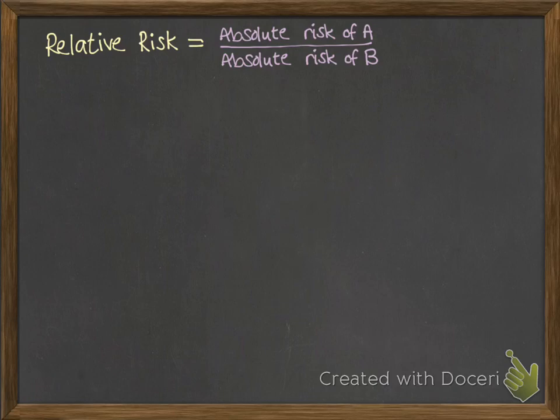To work out relative risk, you do the absolute risk of one divided by the absolute risk of the other. And the one that you put on the top is the thing that is including that risky factor. So in our example of smokers, it was those that smoke would be considered the riskier. And the one that goes on the bottom is your risk of it happening without that factor. So the non-smokers.